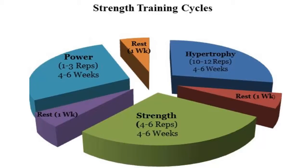There are three phases you can think of when strength training. Hypertrophy, which is 10 to 12 reps of a certain weight. Strength, which is 4 to 6 reps. And power, which is 1 to 3 reps of a certain weight. Each phase should be about 4 to 6 weeks long with an adequate 1 week rest in between phases.